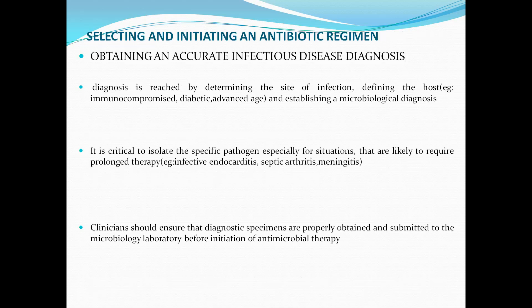Selecting and initiating an antibiotic regimen: obtaining an accurate infectious diagnosis. The diagnosis often reads by determining the site of infection, defining the host — for example, immunocompromised, diabetic, advanced age — and establishing a microbiological diagnosis. It is critical to isolate the specific pathogen, especially for situations likely to require prolonged therapy like infective endocarditis, septic arthritis, and meningitis. Clinicians should ensure that diagnostic specimens are properly obtained and submitted to the microbiology laboratory before initiation of antimicrobial therapy.